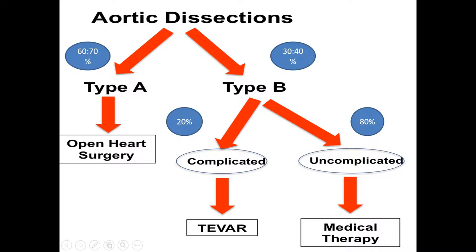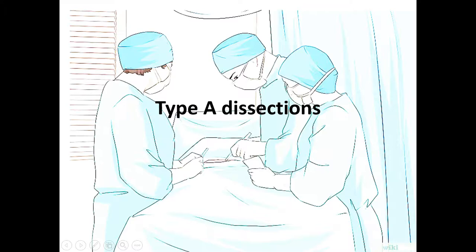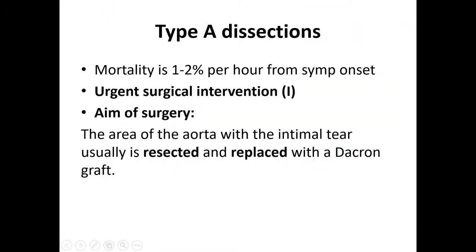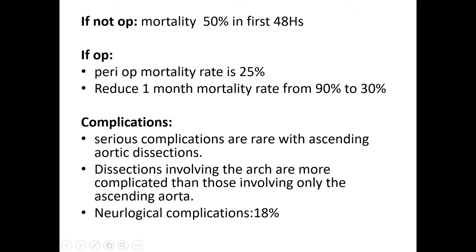For Type A aortic dissection, we need to refer the patient for open heart surgery. For Type B uncomplicated, we give medical therapy; if complicated, we do TEVAR. For Type A, the mortality rate is 1 to 2% per hour, so urgent surgical intervention is required. If not operated on, mortality is 50% in the first 48 hours. Operative mortality is 25%. By one month, mortality decreases significantly, but serious complications can occur, with neurological complications up to 80% when the arch is involved.